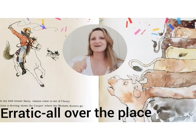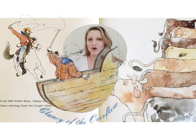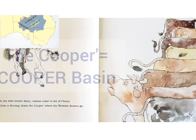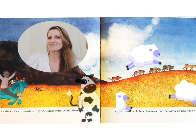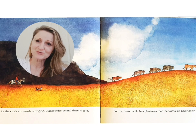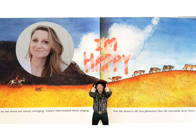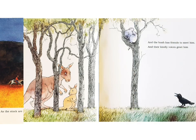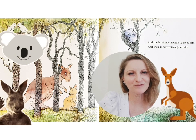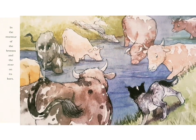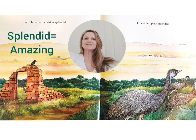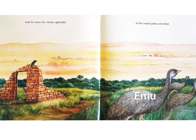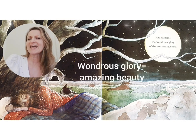'In my wild erratic fancy, visions come to me of Clancy gone a-droving down the Cooper where the western drovers go. As the stock are slowly stringing, Clancy rides behind them singing. And the bush has friends to meet him and their kindly voices greet him in the murmur on the breezes and the river on its bars. And he sees the vision splendid on the sunlit plains extended, and at night the wondrous glory of the everlasting stars.'